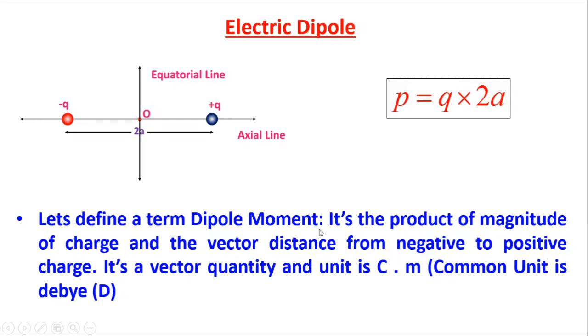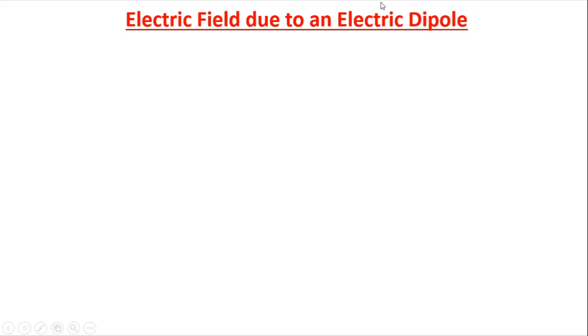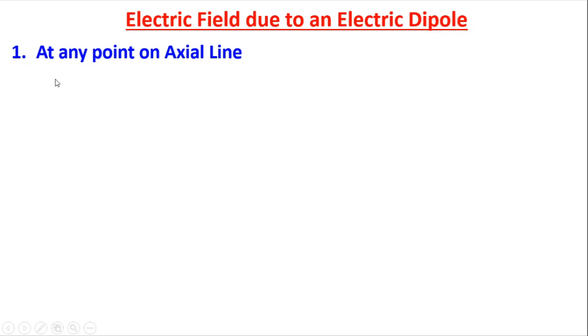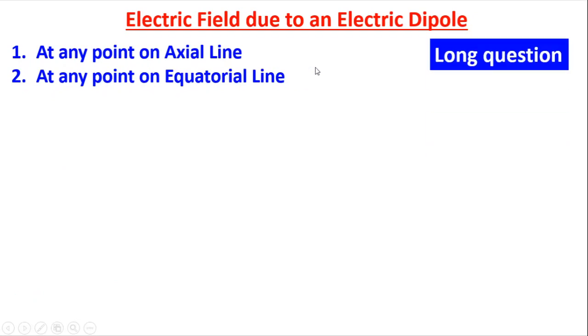So dipole moment is the product of the magnitude of the charge of the dipole into the vector distance between the negative and positive charge. It is a vector quantity with unit coulomb-meter. Now, electric field due to an electric dipole: since the dipole is charged, it has an electric field. We will calculate it at any point on the axial line and at any point on the equatorial line — both are important long questions.